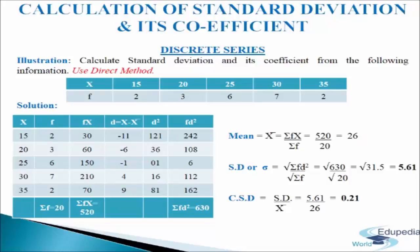We will make a table of 6 columns. In the first column we write down the variable x: 15, 20, 25, 30, and 35. In the second column we write down the frequencies: 2, 3, 6, 7, and 2. We add up these frequencies and get sigma f equals 20.